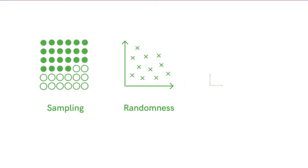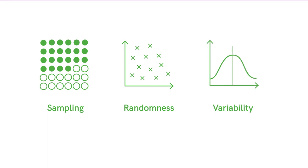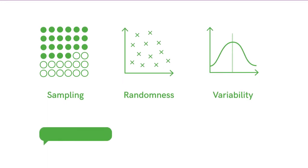We review key statistical concepts such as sampling, randomness and variability, then discuss how you can plan what types of analysis are needed to answer different kinds of research question.